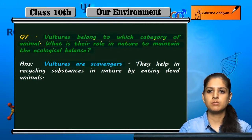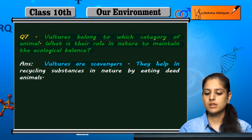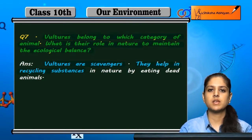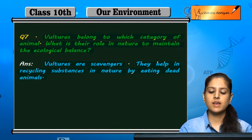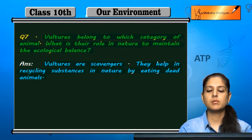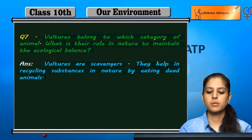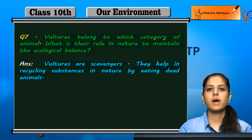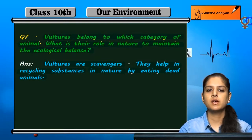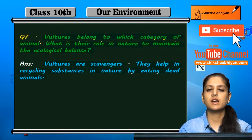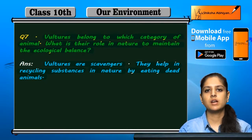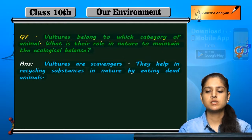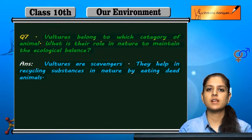Scavenger type ki animals hote hain. Ye animals kya karte hain — they help in recycling substances in nature, kyunki ye dead animals ko khaate hain. Is se ecological balance bana rehta hai, kyunki unke andar jo substances hain wu recycle ho jaate hain. Ye dead and decaying animals decompose ho jaate hain aur ultimately wahaan se khatam ho jaate hain. So vultures scavengers hain aur recycling mein help karte hain.